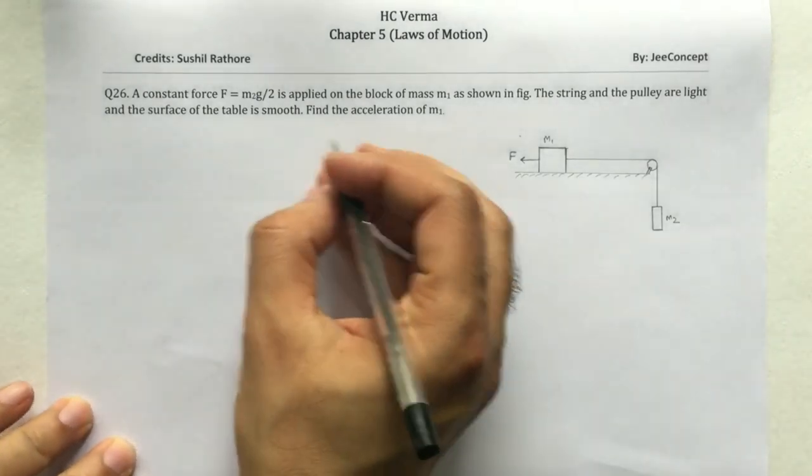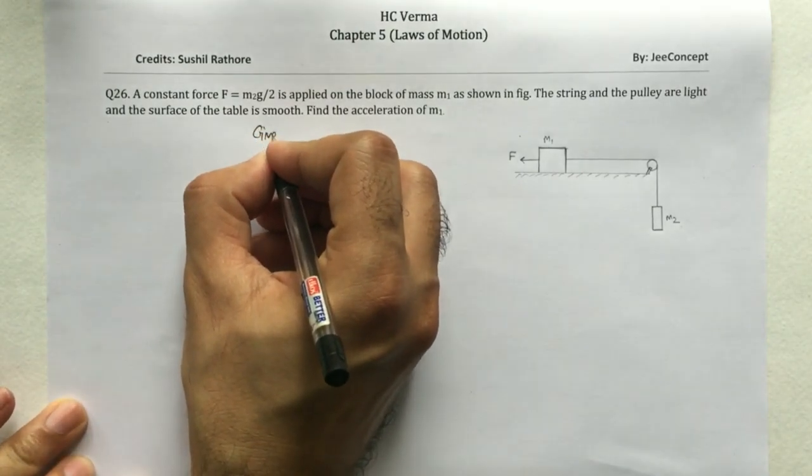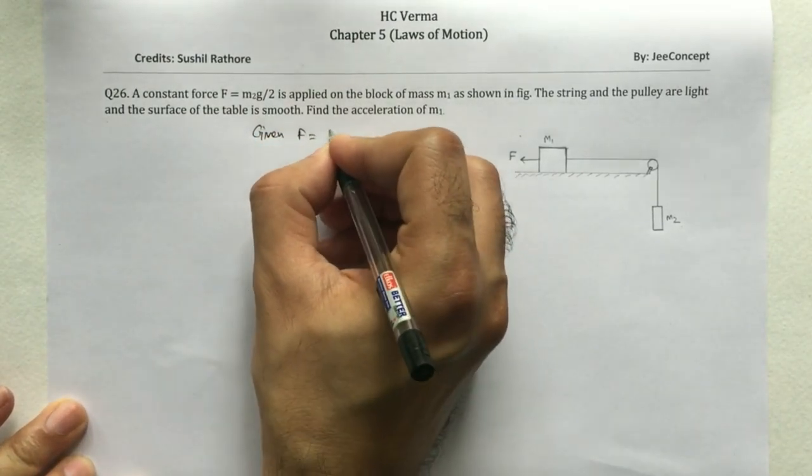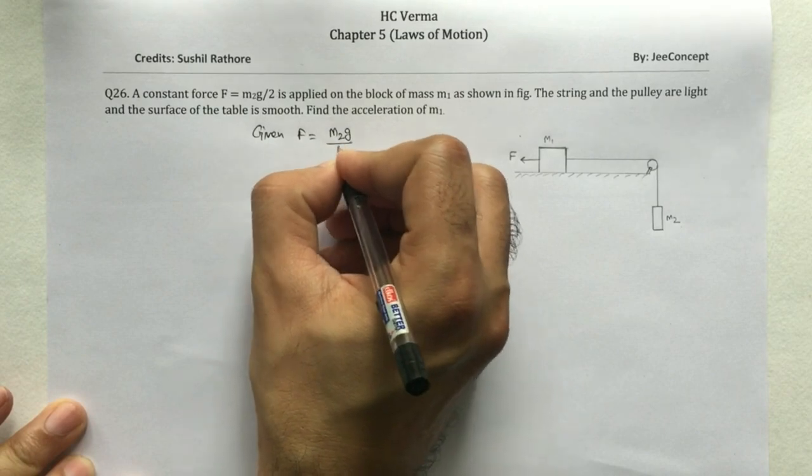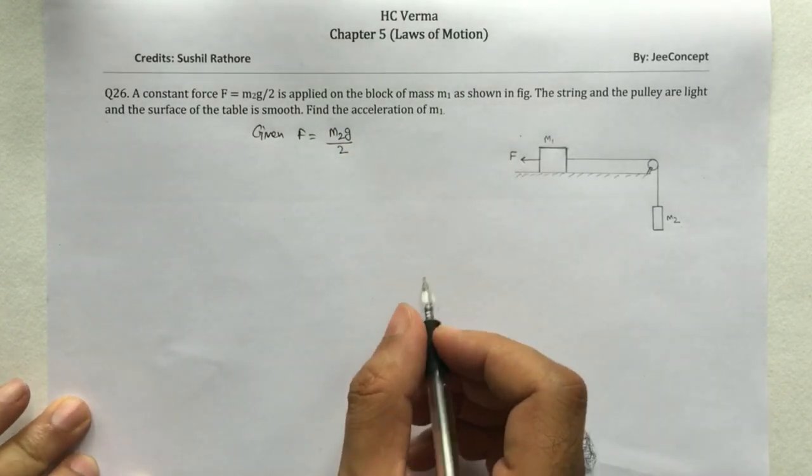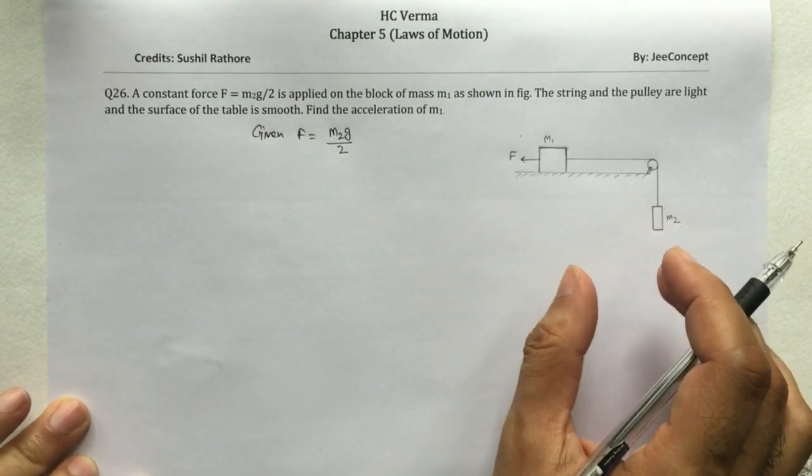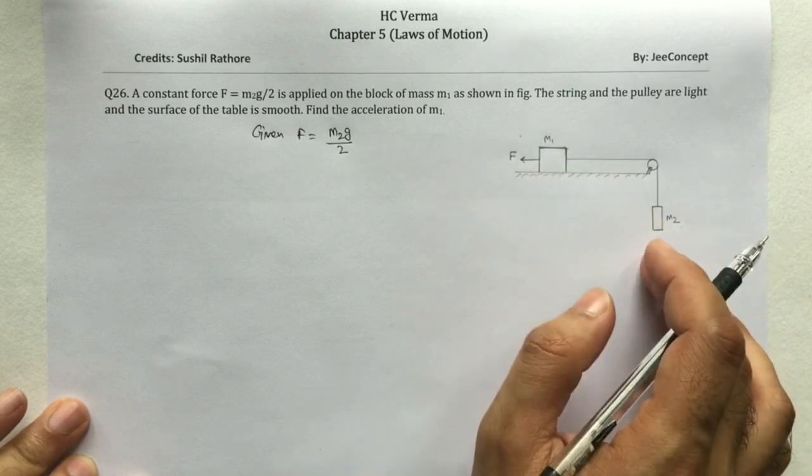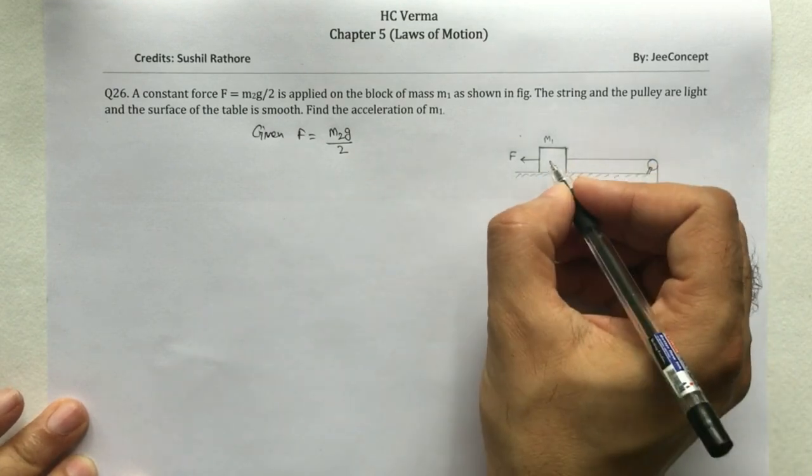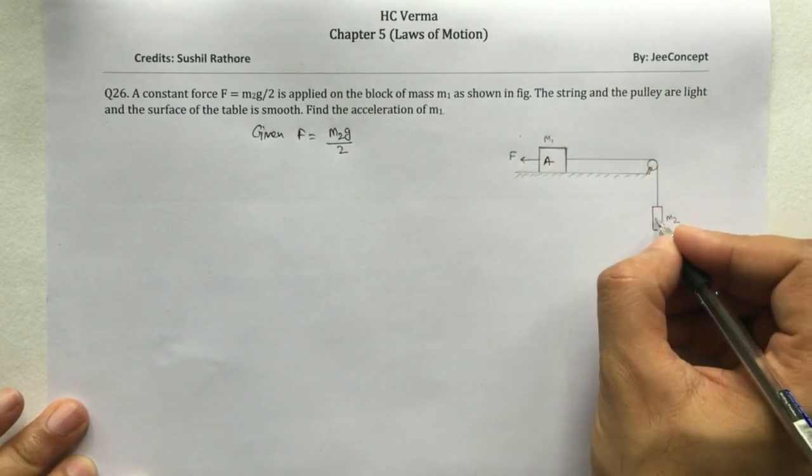So in this problem, the given force is m2g/2. This problem can easily be solved using the free body diagram of these two blocks. Say this block is A and this block is B.